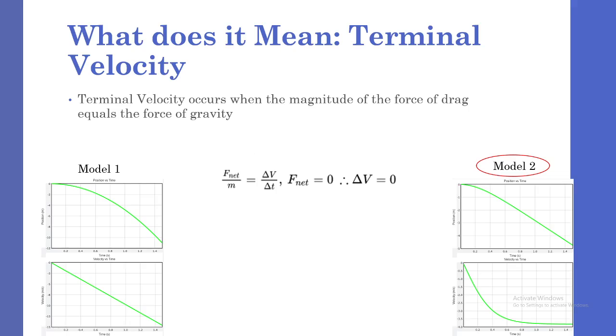To further explore this difference, we're going to be looking at the terminal velocity. Terminal velocity occurs when the magnitude of the force of drag is equal to the magnitude of the force of gravity. Since the force of drag and gravity are in opposite directions, they end up balancing out, giving us a net force of zero. So by Newton's second law, we know that delta v, the change in velocity, must also be zero to satisfy the equation.